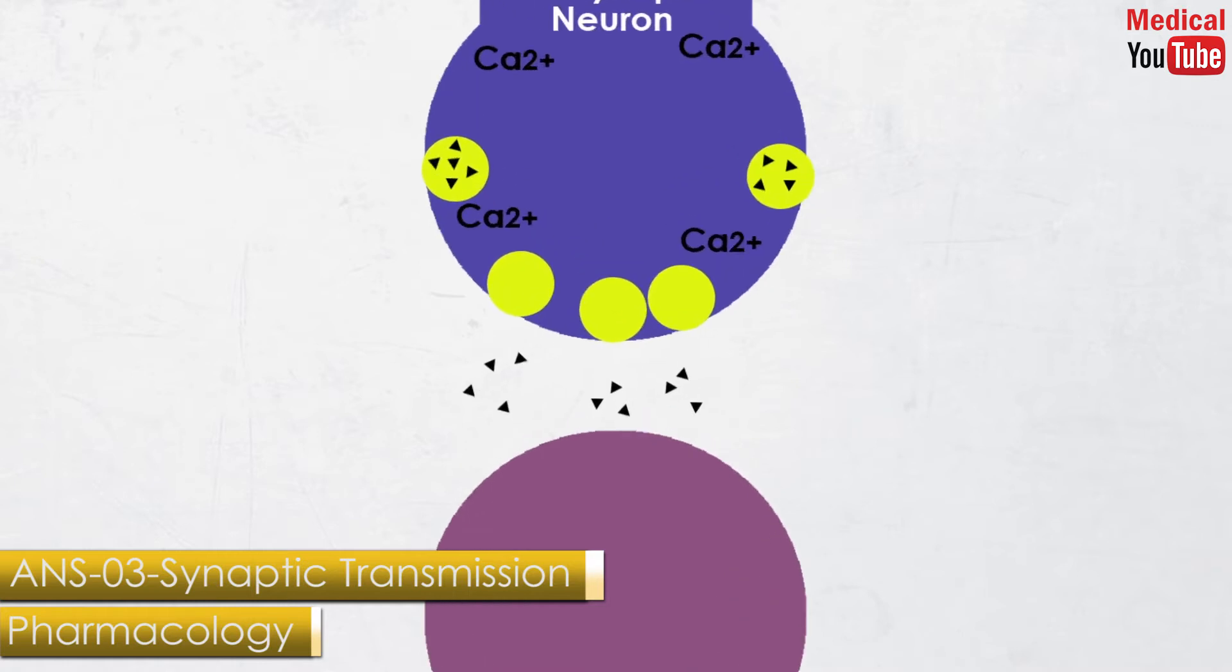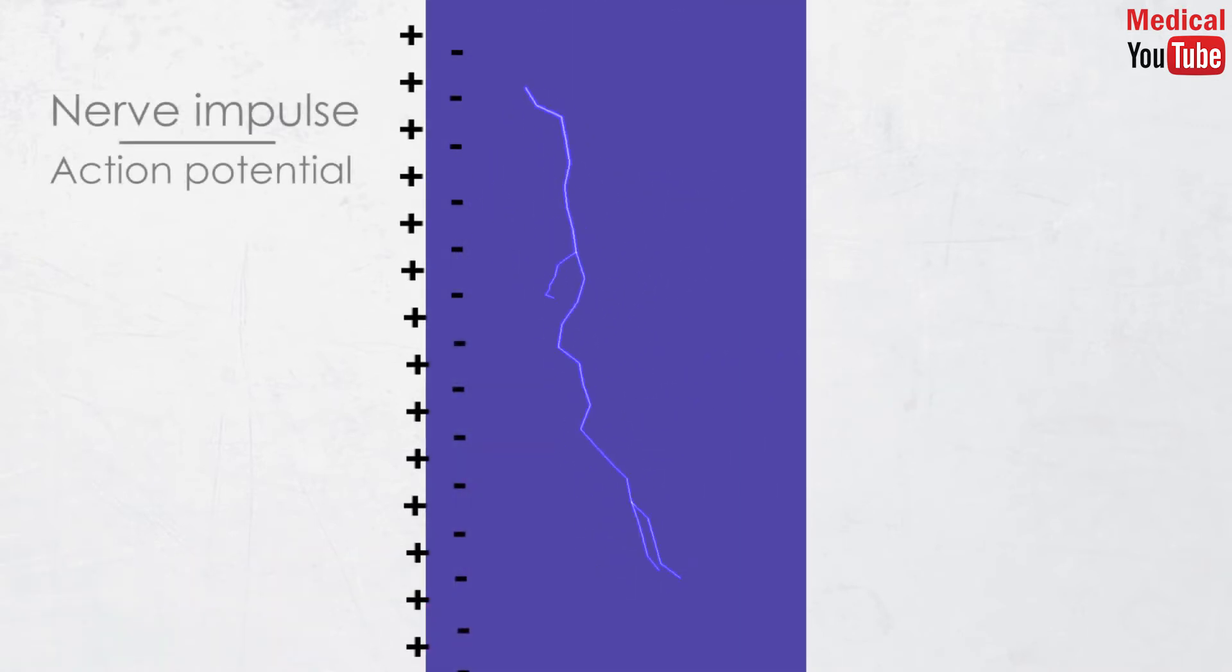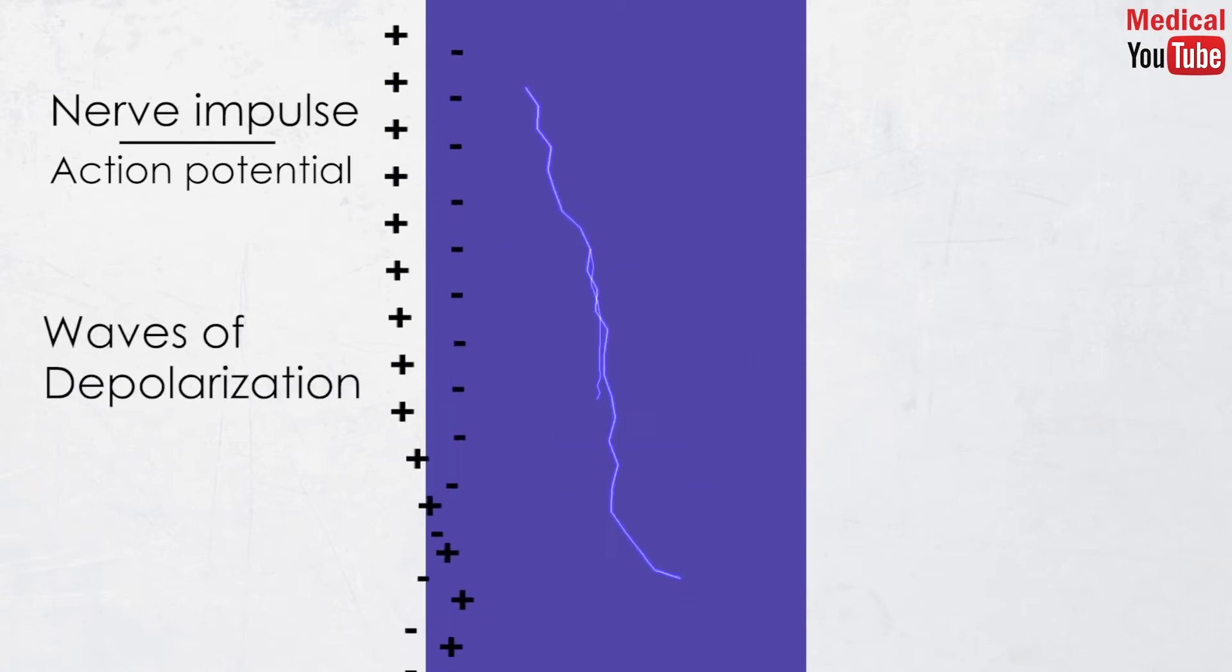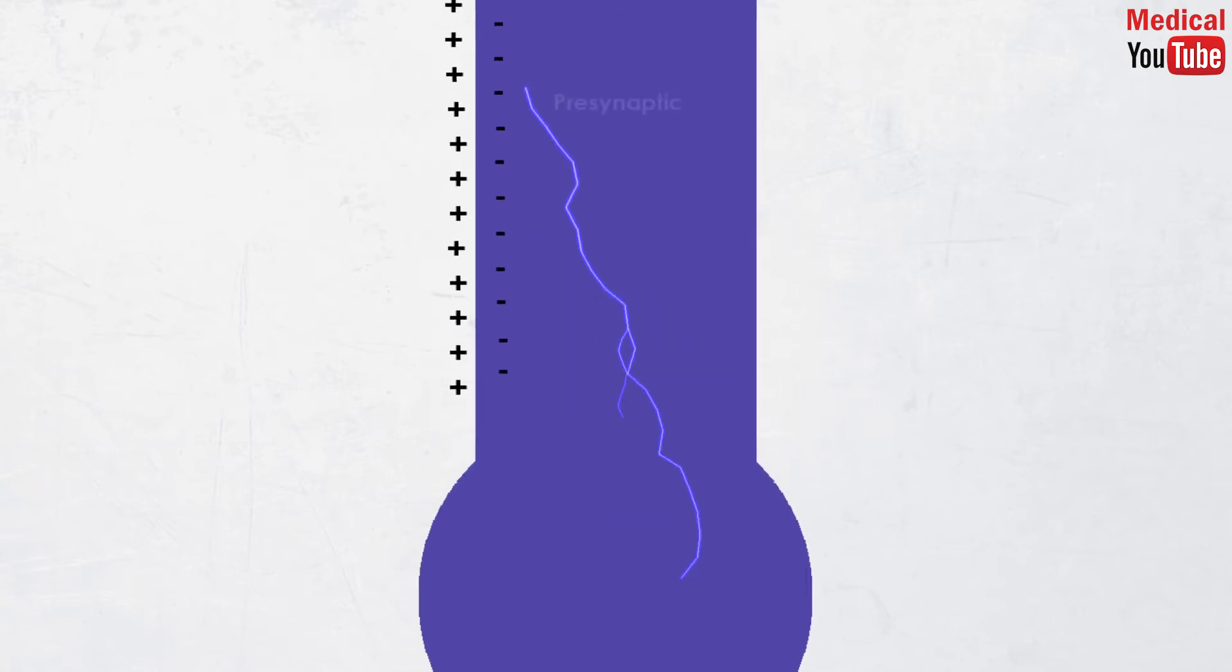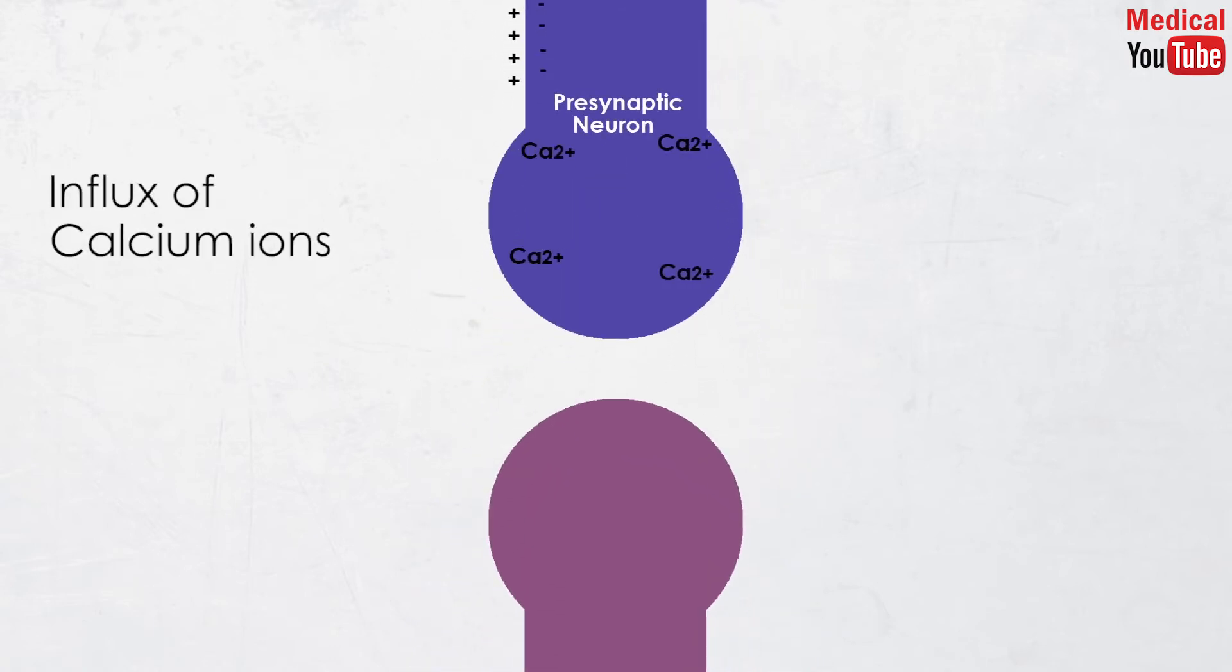In this video we will discuss synaptic transmission. The nerve impulses or action potentials move through the nerve as waves of depolarization until reaching the nerve terminal. This neuron is called the presynaptic neuron. Then influx of calcium ions occurs at the nerve terminal.